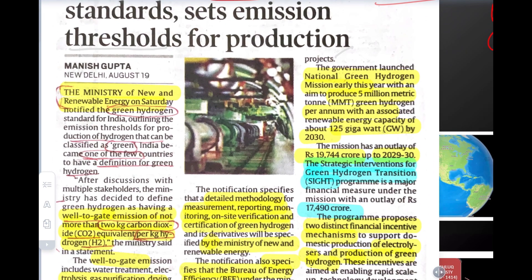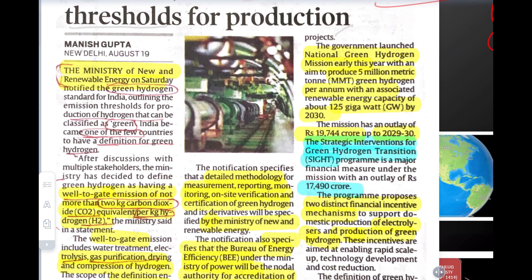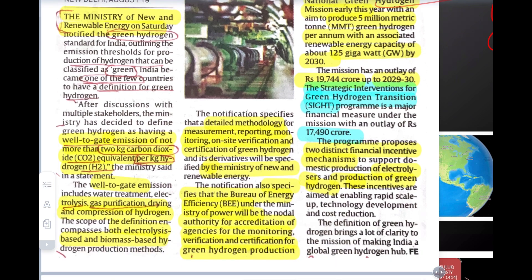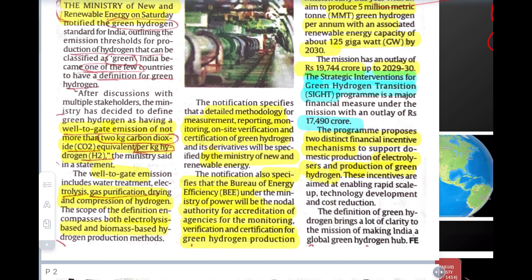In this article, the Ministry of Renewable Energy has notified that this standard will apply in India. If you want a Green Hydrogen certificate, they have told you that no more than 2 kg of CO2 should be emitted to produce 1 kg of hydrogen. If you meet that, you will get a Green Hydrogen certificate.